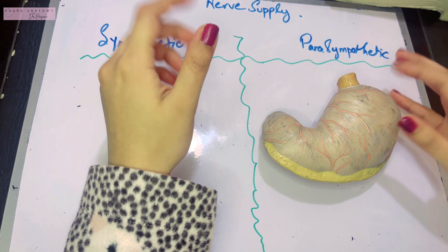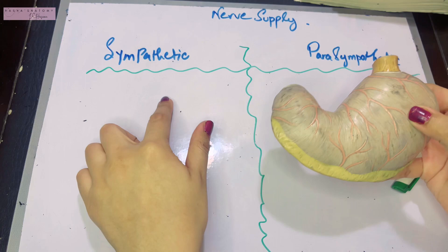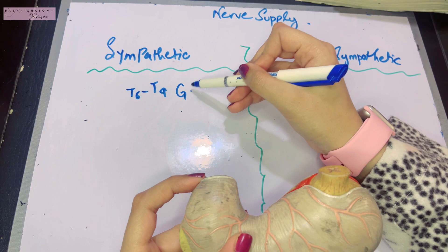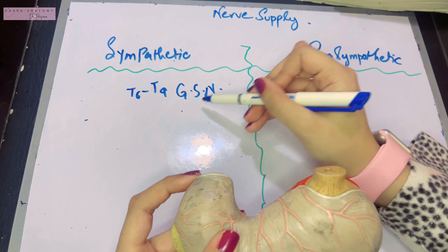Just like every autonomic nerve supply, the stomach also has a sympathetic and a parasympathetic nerve supply. The sympathetic nerve supply of the stomach is derived from the T6 to T9 segments of the spinal cord via the greater splanchnic nerves that we studied in the thoracic sympathetic trunk and from the esophageal and hepatic plexuses.